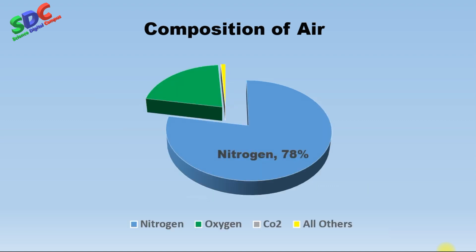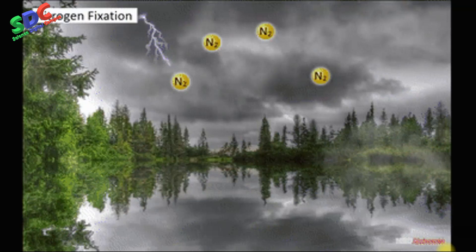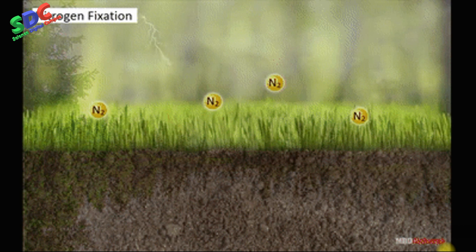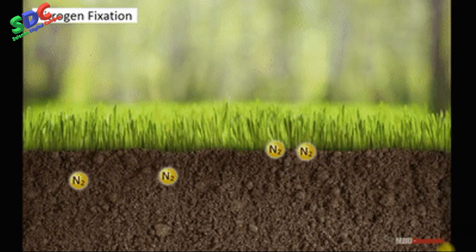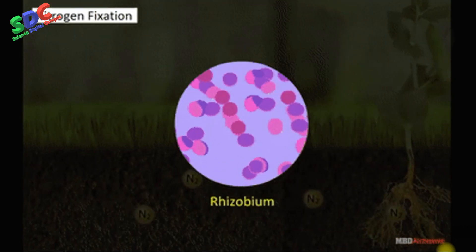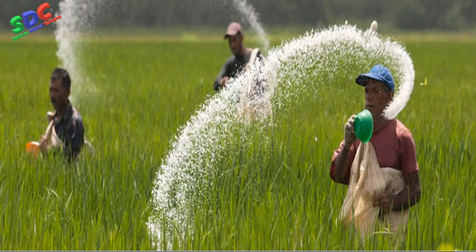About 78 percent of air is nitrogen. Nitrogen has a number of uses — mainly, it is important for plant growth. However, plants cannot use nitrogen from the air directly; instead, they get their nitrogen indirectly with the help of microorganisms that are present in the soil.